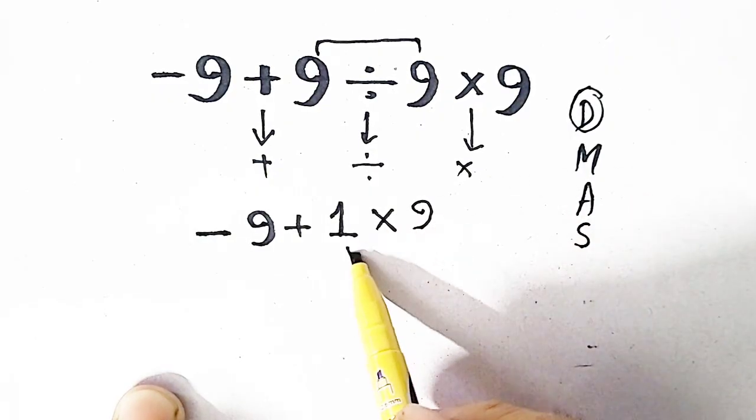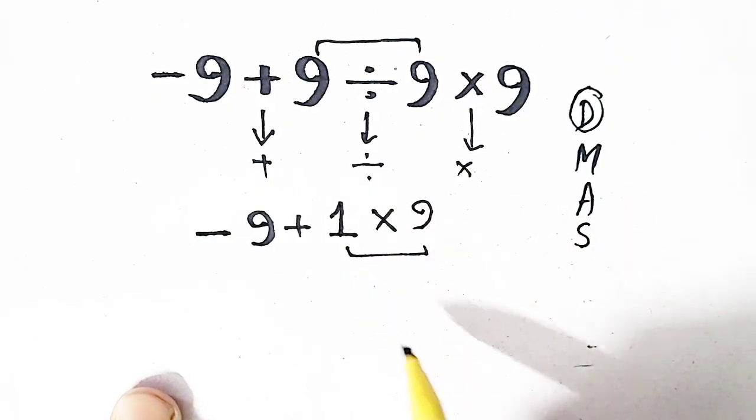Now it's turn of multiplication. So we will multiply 1 and 9. We will get minus 9 plus 9.